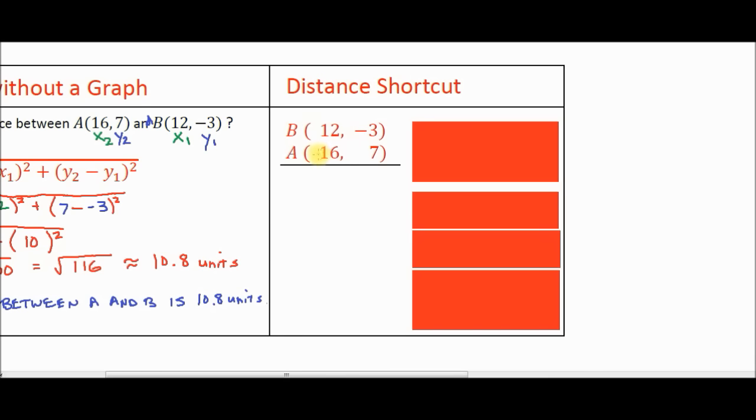and you're going to write one on top of the other. And you can see I'm using the same coordinates that we used in the lesson on distance without a graph, because I want to show you that this method, of course, gives you the exact same answer as the distance formula. Now the question is, is it important which point I put on top and which point I put on bottom? And the answer is no. It makes no difference. The answer is going to come out to be exactly the same.